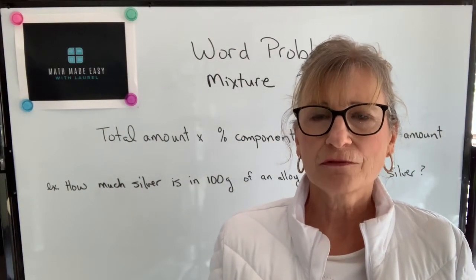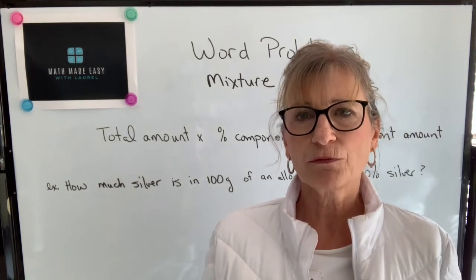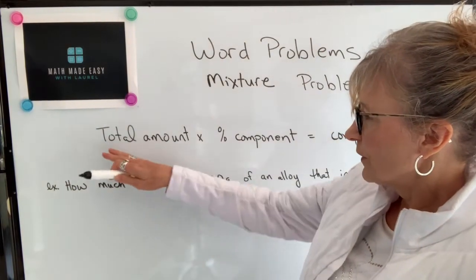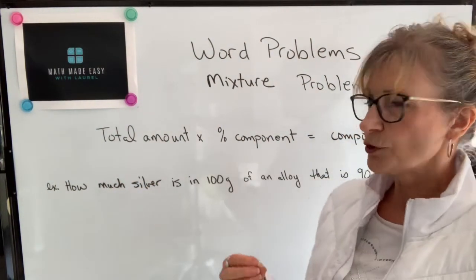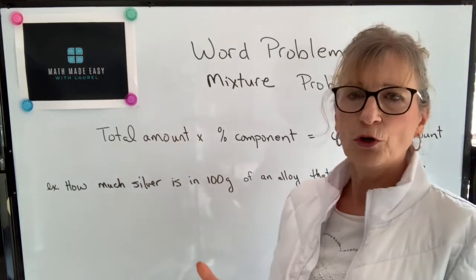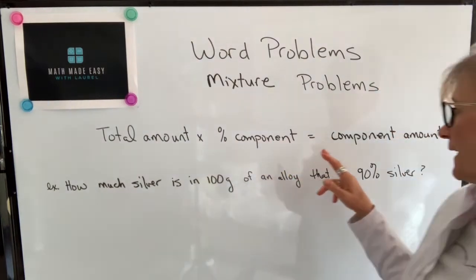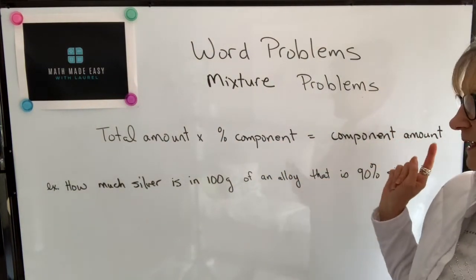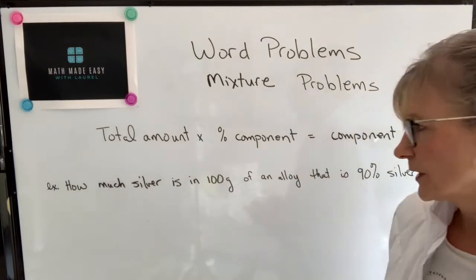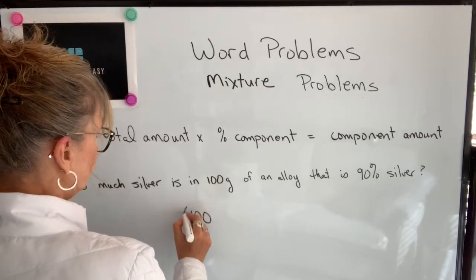When you encounter word problems that involve mixtures, there's a basic mathematical relationship you need to understand. When you're finding a certain percent of something, you multiply by that percent. You take the total amount — it could be a volume or a mass — and you multiply by the percentage of the component to get the amount of that component. For example, if I said how much silver is in 100 grams of an alloy that is 90% silver...